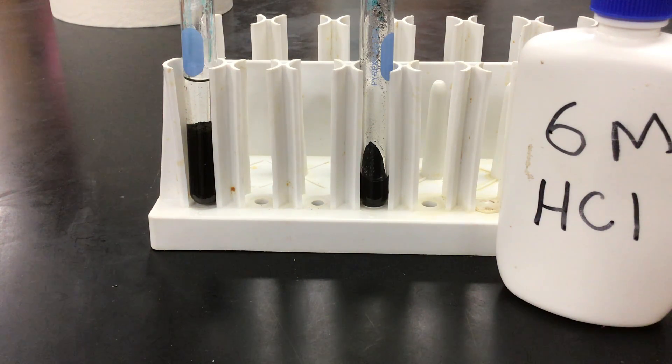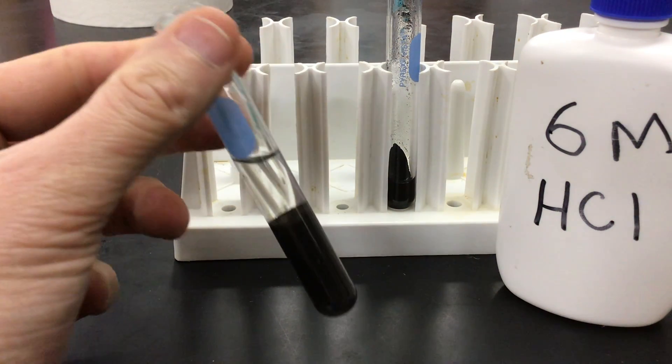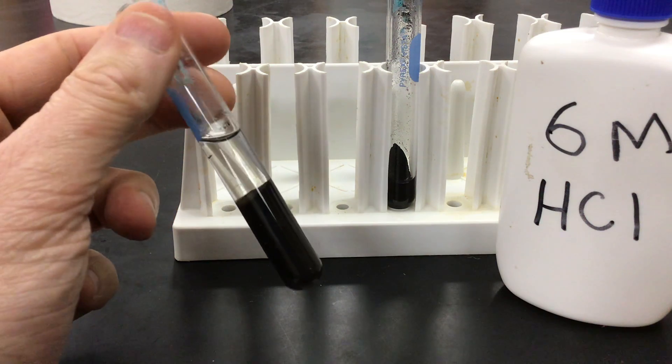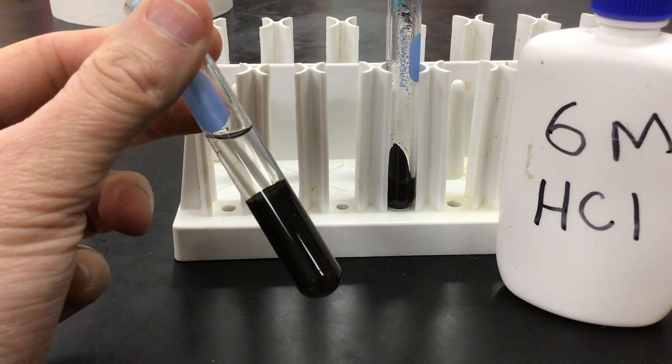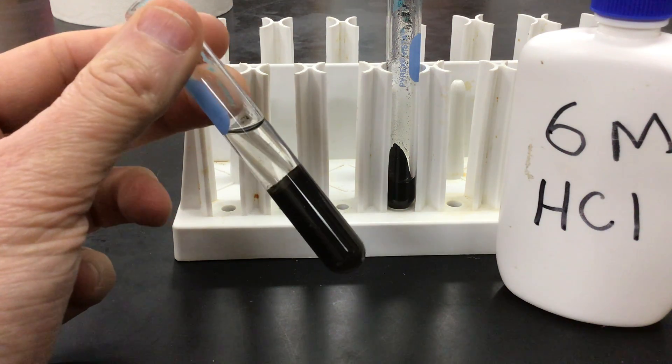In step four of the Copper Again Lab, at the end of step three, we were left with a test tube that, after putting it in the hot water bath, the solid changed from a bright, dark blue to black.